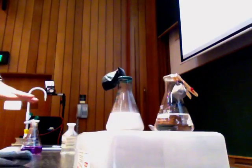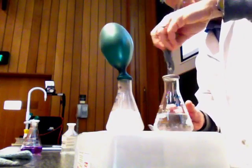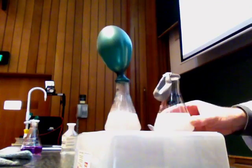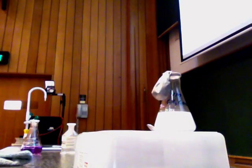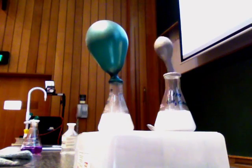The strong acid, the HCl, reacts quickly with the magnesium, and the balloon goes straight up. The weak acid only reacts slowly, releasing the H+ to react with the magnesium bit by bit, as the equilibrium shifts to produce more H+ as it's eaten up by the magnesium.